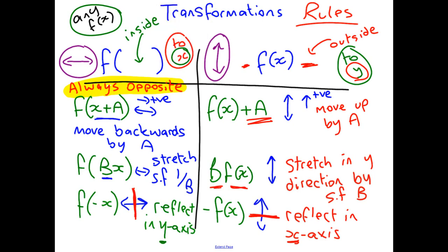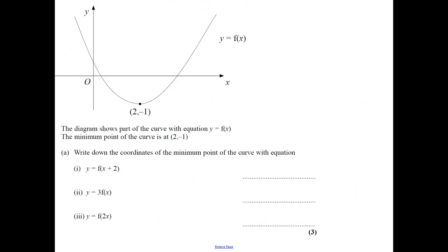Let's do some questions — these are from GCSE Edexcel papers. You can pause, have a go yourself, and then watch me do it to see if you agree. The diagram shows part of the curve with equation y equals f(x). The minimum point is at (2, −1), as we can see. Write down the coordinates of the minimum point of the curve with equation y equals f(x + 2).